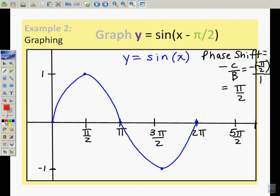So in red, we're going to shift all of our points to the right by positive π/2. I'm going to shift the initial point, the maximum, the midpoint, the minimum, and the end point.